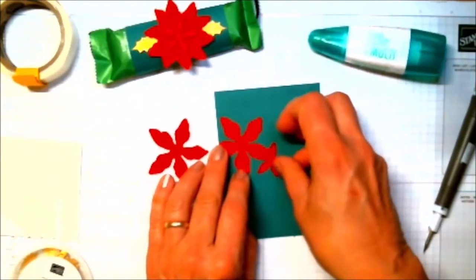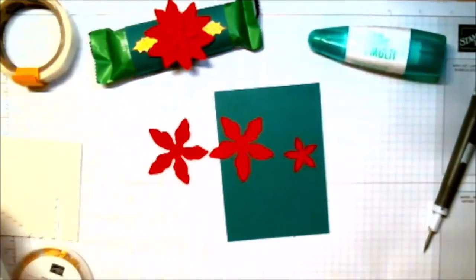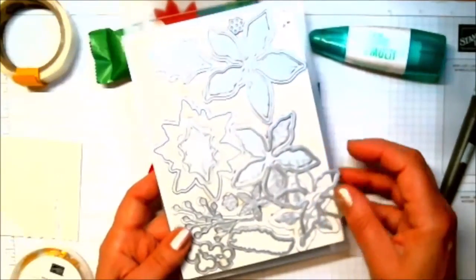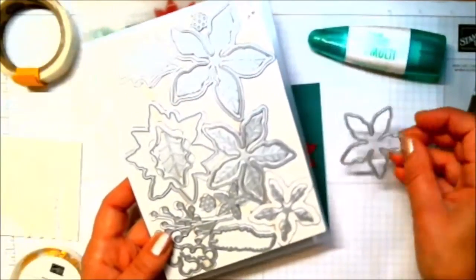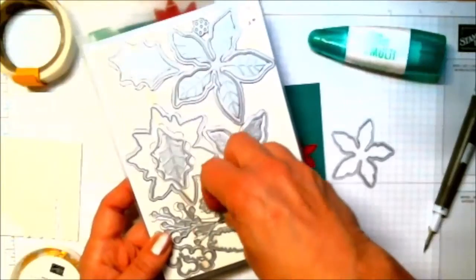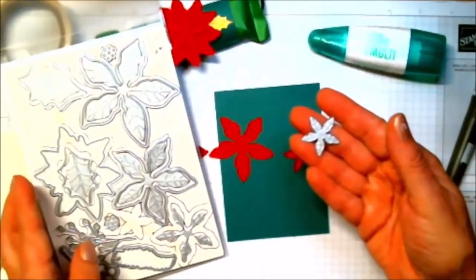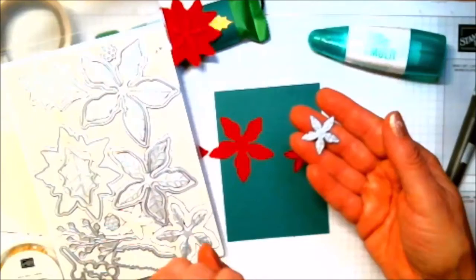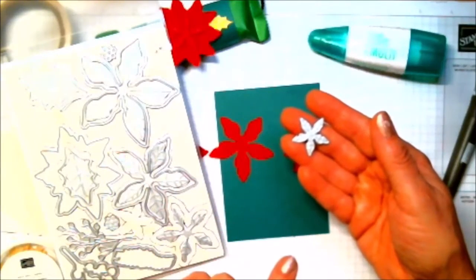Now, these three pieces of poinsettia are from the poinsettia dies, and what I did was I cut two of this size and one of this one right here. If you happen to have these poinsettia dies and you choose this project, great, you can use your own dies.